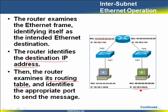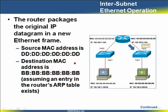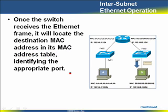The router looks in its routing table to find how to reach the 192.168.2.0 network. It finds the correct outbound interface. It then creates a brand-new Ethernet frame: its own MAC address as the source MAC, and Computer B's MAC address as the destination MAC. The destination IP address is left unchanged as Computer B's IP. The router strips off all the original Ethernet information, keeps the IP and TCP components, wraps them in the new Ethernet frame, and sends it out the correct interface. The switch on that side looks up Computer B's MAC and forwards it to the correct port.